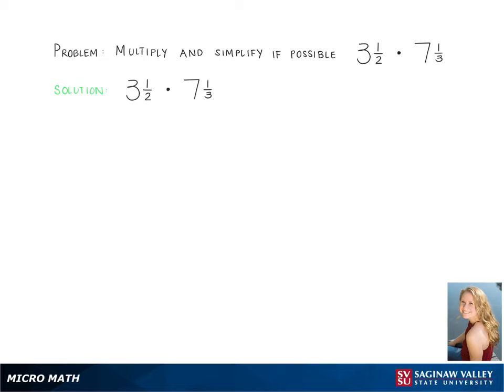Here we are solving the problem 3 and 1 half multiplied by 7 and 1 thirds. The first step in this problem is to change the mixed numbers into improper fractions. Doing so gives us 7 halves and 22 thirds.